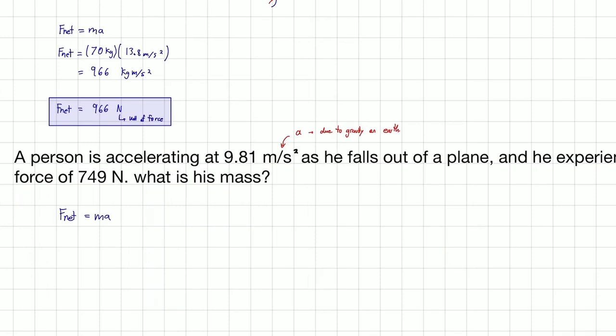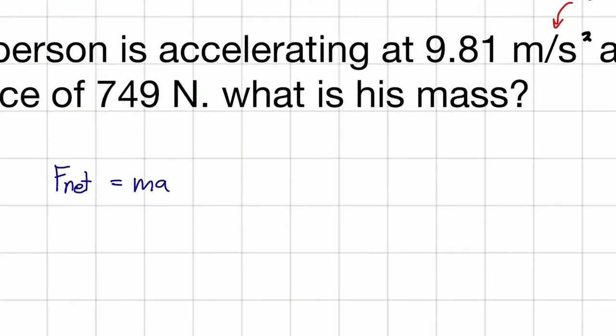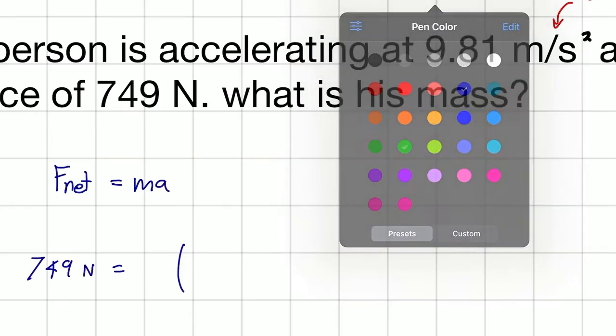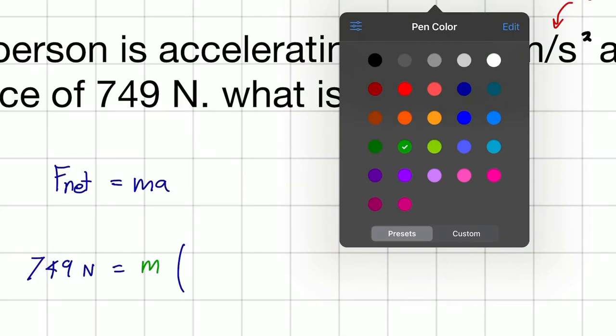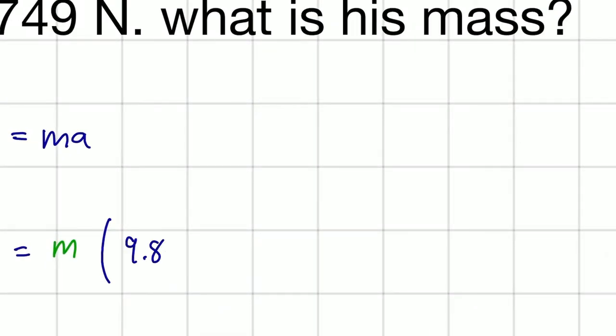So let's plug in our values into this equation. We have an acceleration, and we have a force. So we have a force of 749 newtons, and that is equal to a mass, which is unknown, times our acceleration of 9.81 meters per second squared.